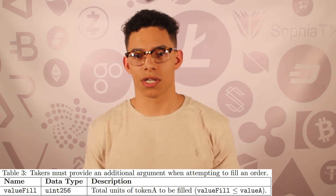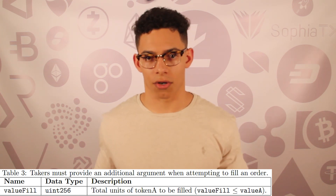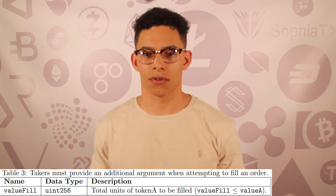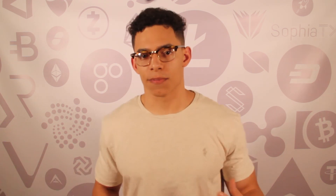Regarding fill and partial fill orders: the exchange smart contract stores a reference to each previously filled order to prevent a single order from being filled multiple times. A partial fill can be executed by the taker by specifying an argument called valueFill when calling the exchange smart contract's function — this is an unsigned integer that must be less than or equal to the total units of Token A. Expiration time is set by the maker and references timestamps provided by the Ethereum Virtual Machine.